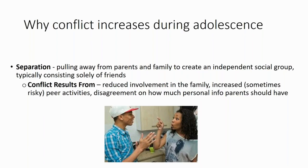Separation can also lead to conflict over an often increased involvement in peer activities, which can sometimes include risky behaviors or behaviors that parents aren't comfortable with, as well as conflict over how much personal information parents should have the right to know. For example, parents and teens often disagree regarding the amount of access parents should have to things like social media accounts, texts, emails, and video game chats.